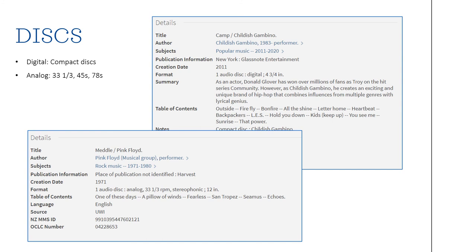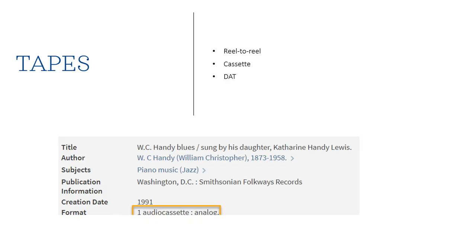For analog discs, details like 33 and a third rpm, stereophonic, and 12 inch are added, which allows you to figure out that it's vinyl — though again, no language for vinyl or record is included in the catalog entry. It's less likely that you'll encounter tapes in your library career unless you're working in special collections or an archive. Audio cassette is used to indicate a cassette tape, with analog or digital following it. A digital audio tape would also be described as an audio cassette but with digital afterwards. You may also encounter reel-to-reel tapes, though audio reels are a separate carrier type in cataloging.